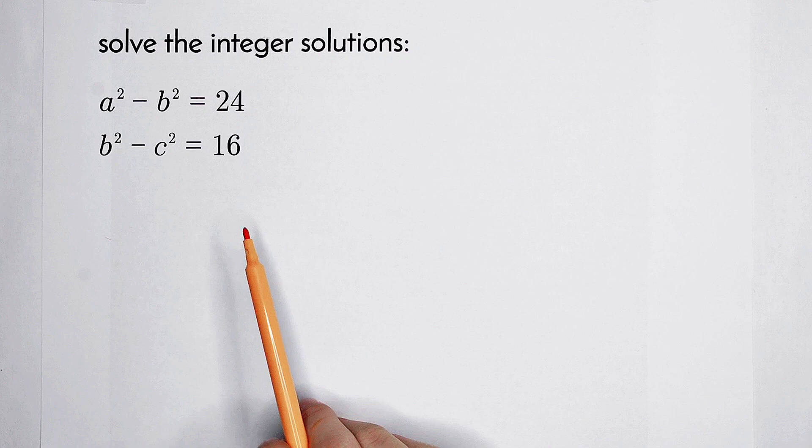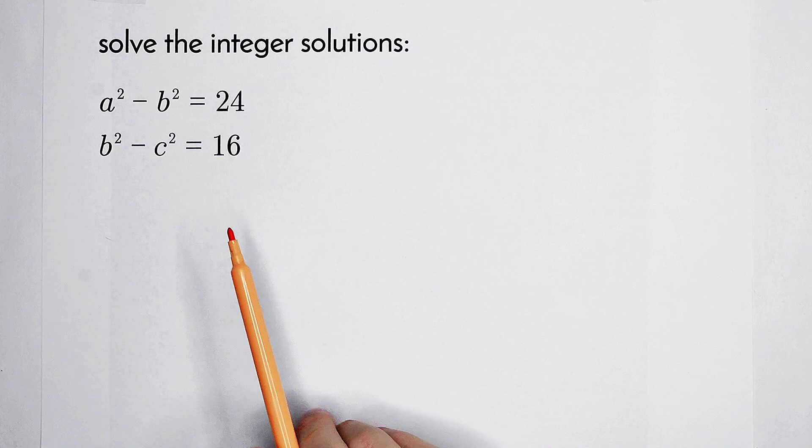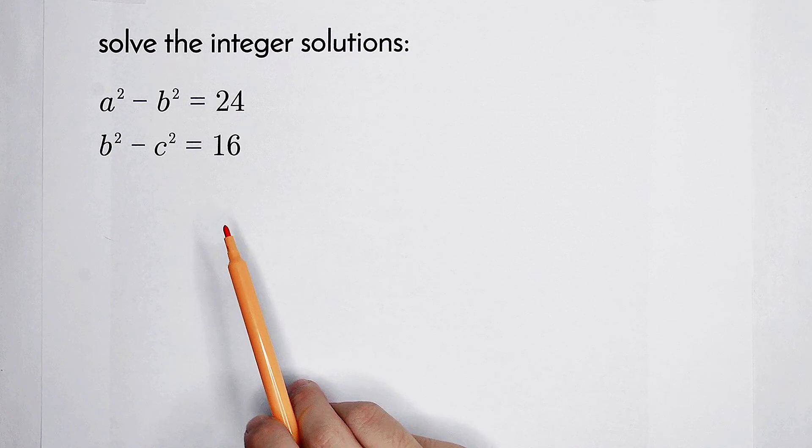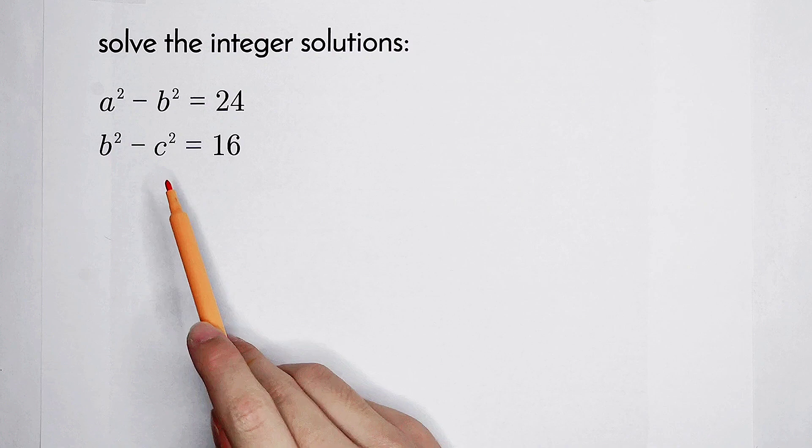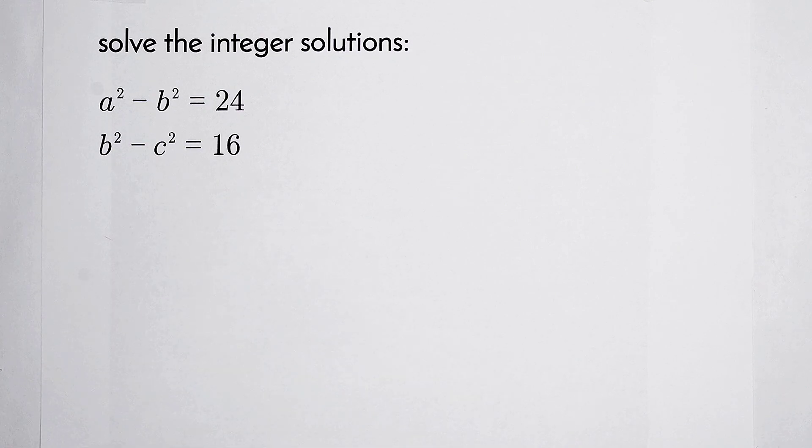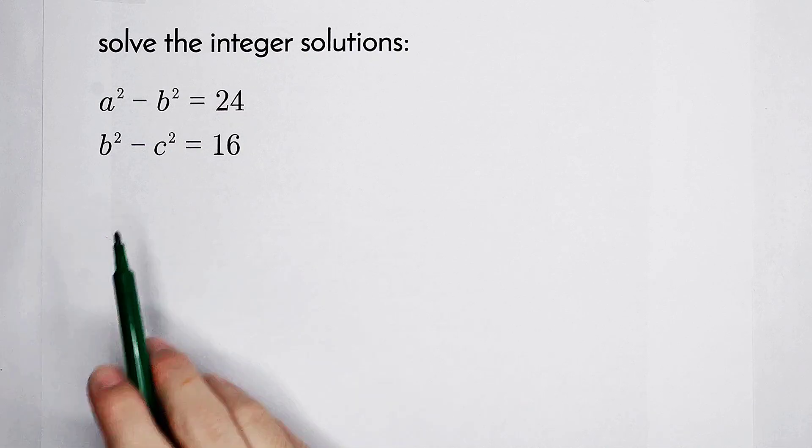So now, since a squared, b squared, and c squared are all non-negative, without loss of generality, we can suppose a, b, and c are non-negative. We only have to add a negative sign in front of each of the solutions. That's okay.